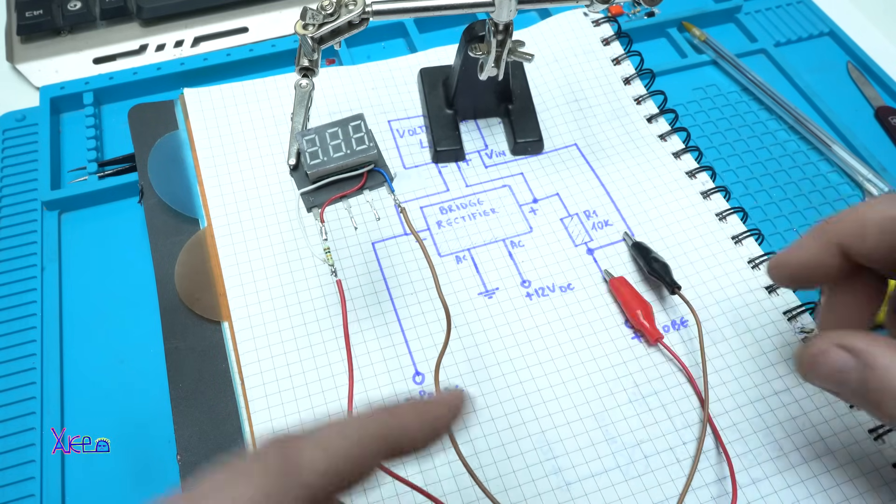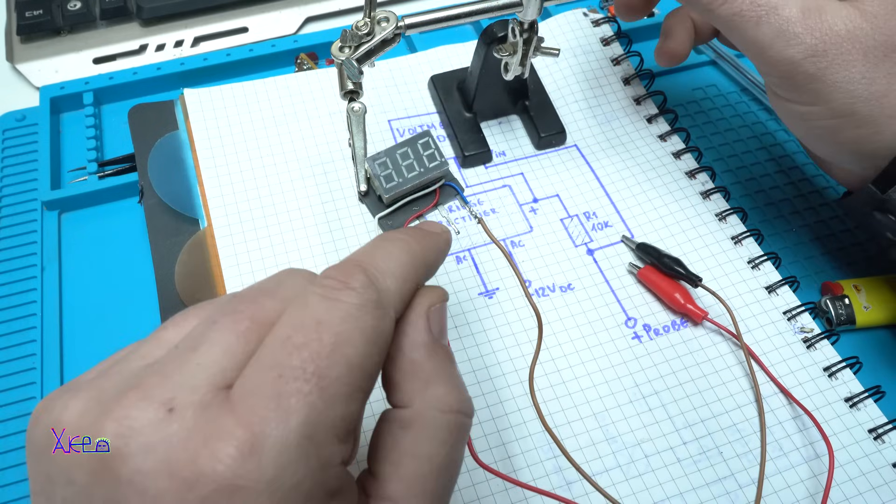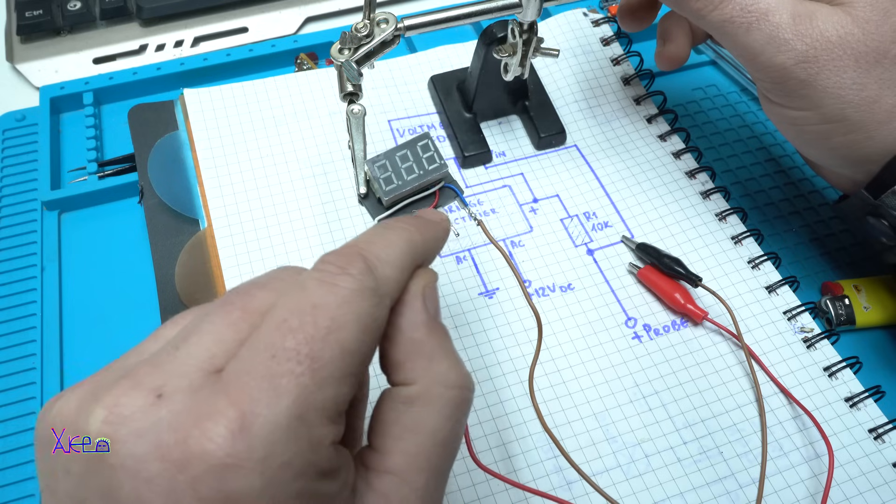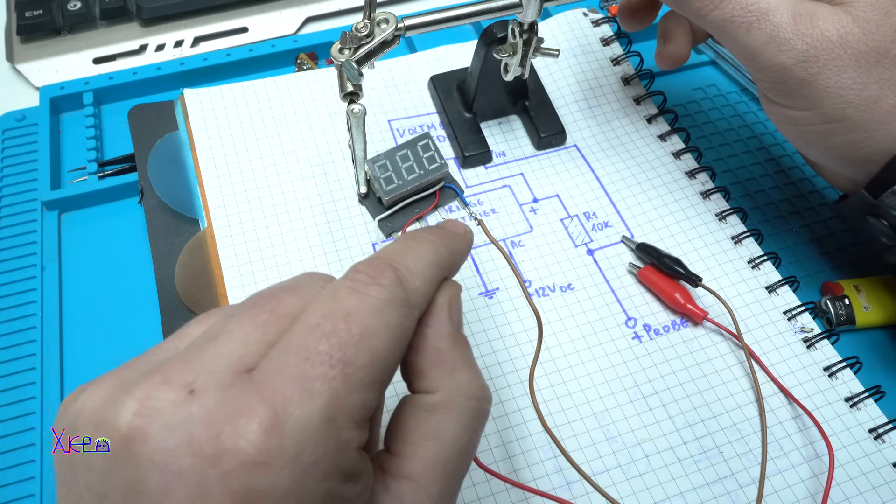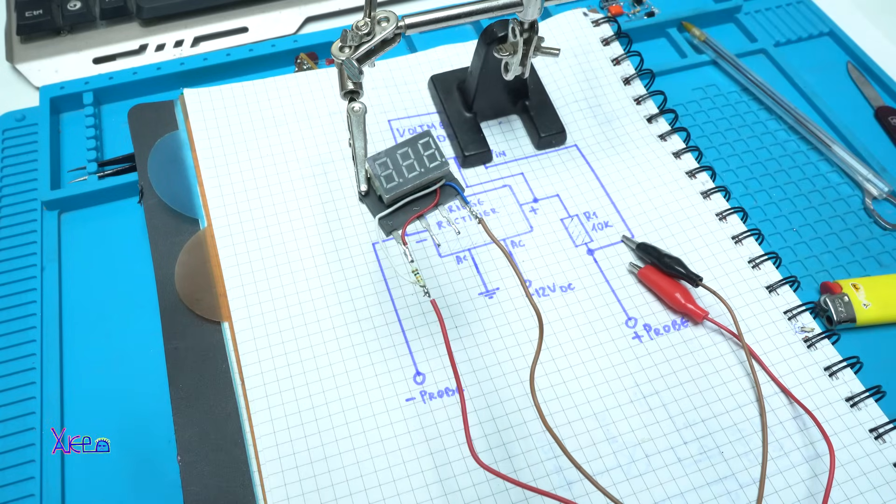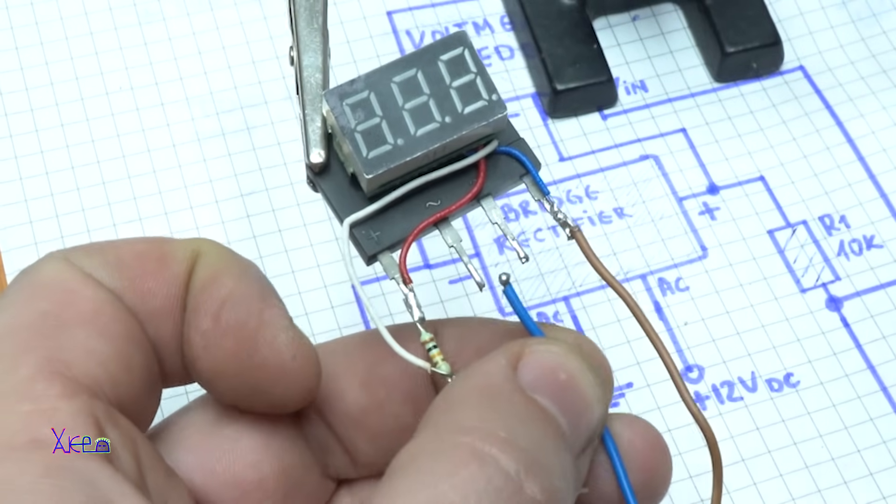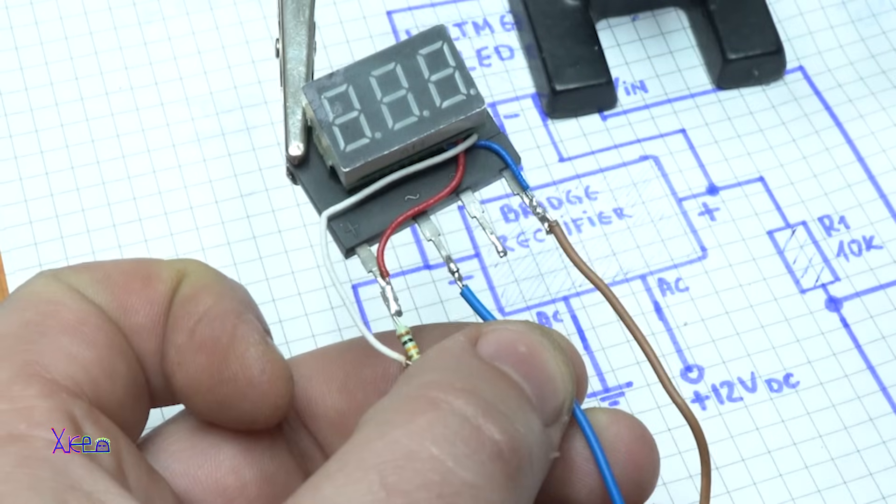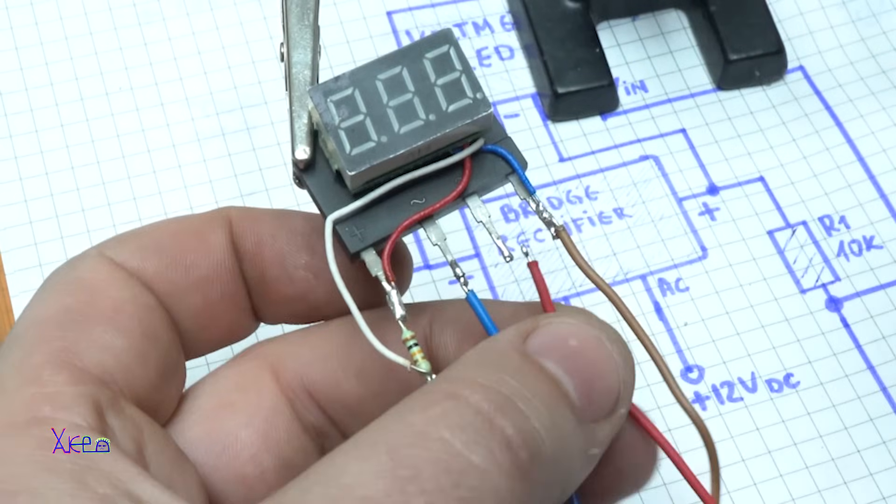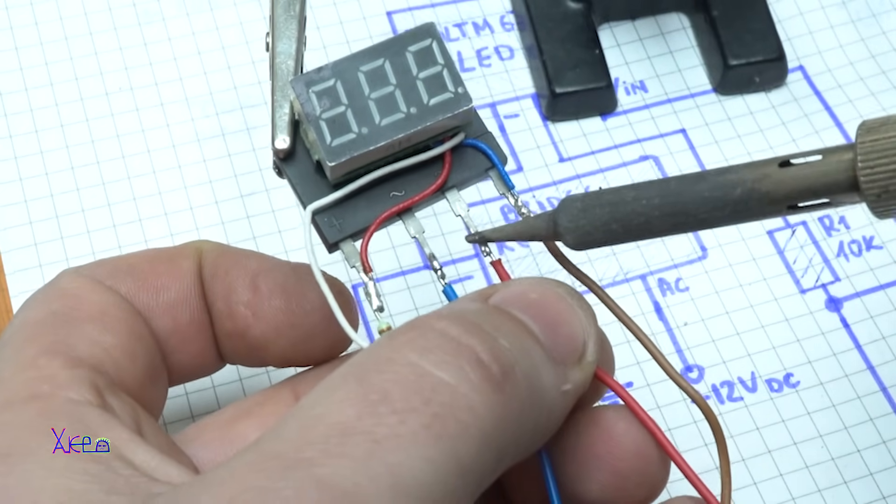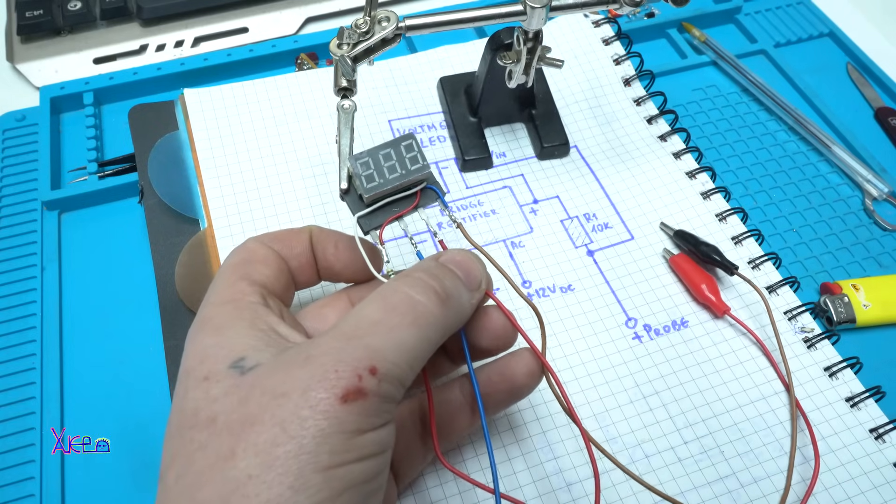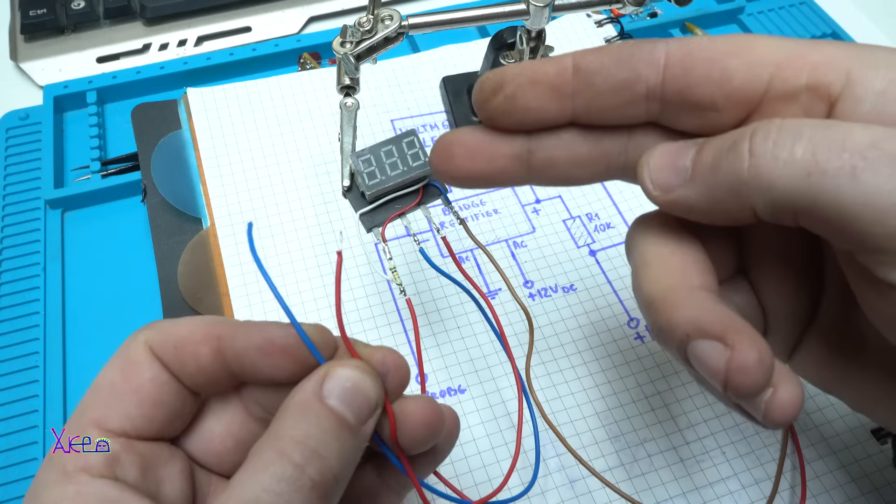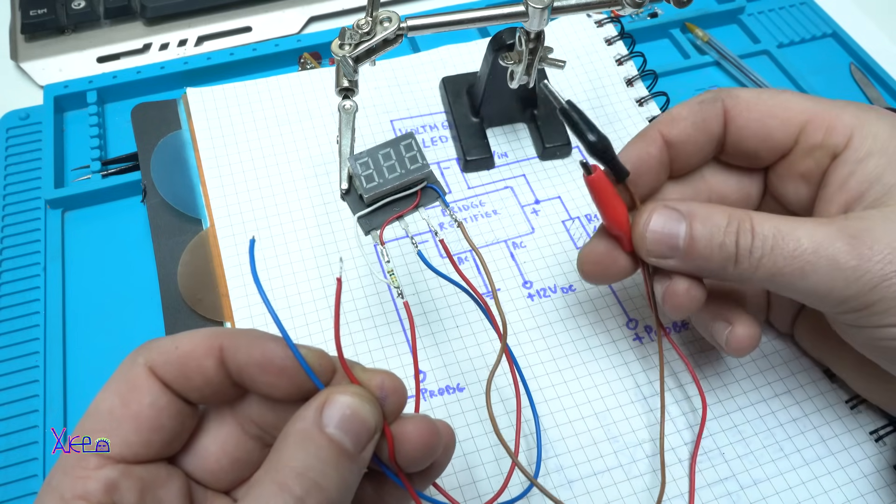We solder the probe wires and on AC input of the bridge rectifier, these two legs will supply with voltage of 12 volts DC voltage right here. Let's solder one. Okay and the positive. I'm done. So we have two wires for powering the device with 12 volts and we have measuring probes.